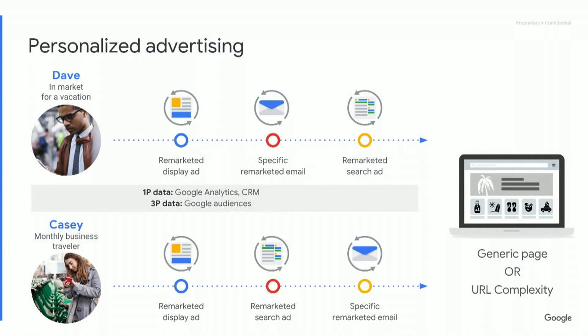As marketers and advertisers, we spend a lot of time developing personalized ads for exactly the right audience. Here we're looking at two different users: Dave is in the market for a vacation, and Casey is a monthly business traveler. They're going to get very different remarketed ads — remarketing display ads, specific email, another search ad — based on what we know about them. But what we don't want to do is after all that effort creating perfect personalized campaigns, land them on a generic landing page, because for at least one of them it's not going to match their intentions.